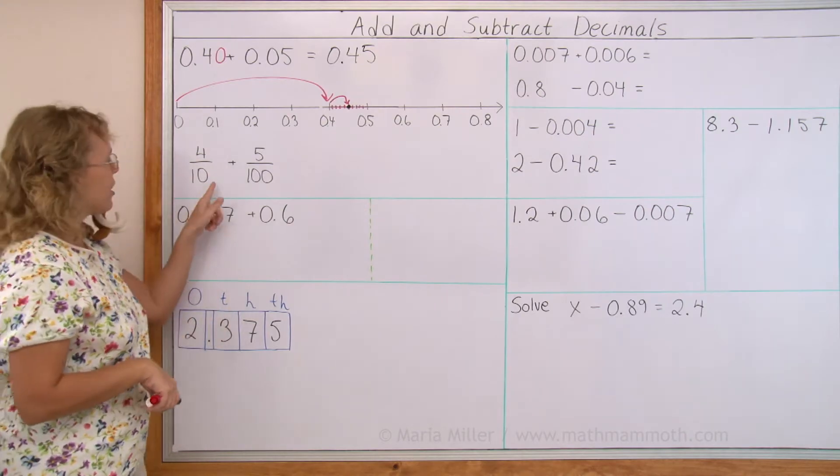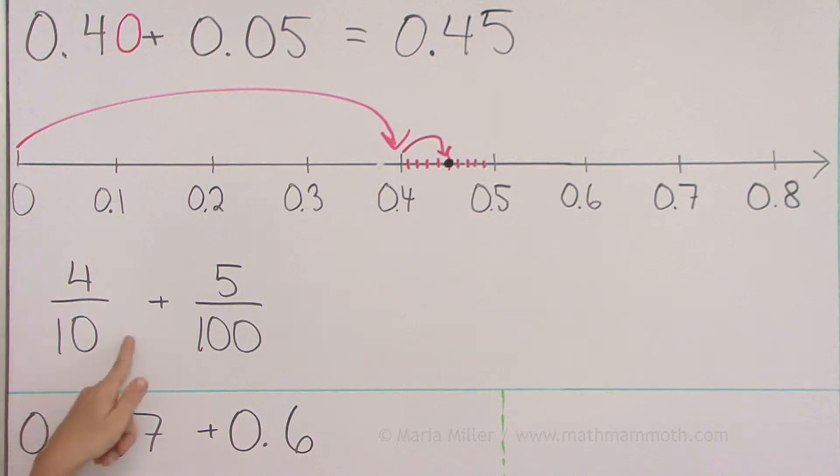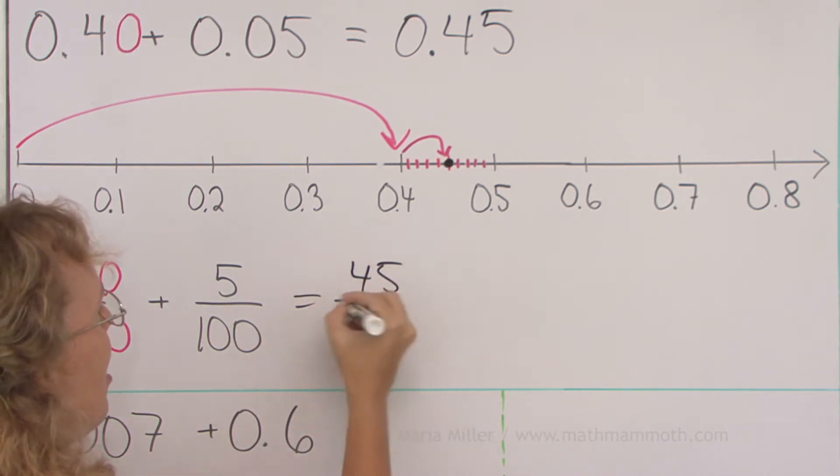I also wrote this problem with fractions: 4 tenths plus 5 hundredths. And we can do the same thing here. We can use equivalent fractions and make this to have hundredths parts. It becomes 40 hundredths, right? And then we add and get 45 hundredths.